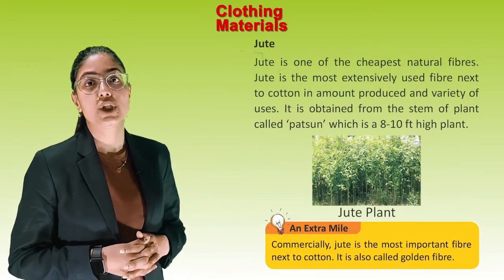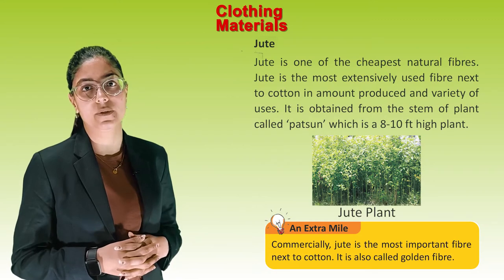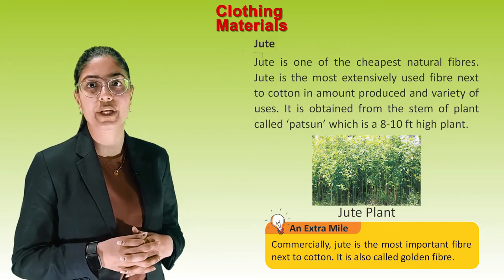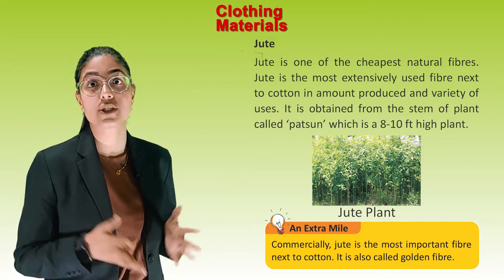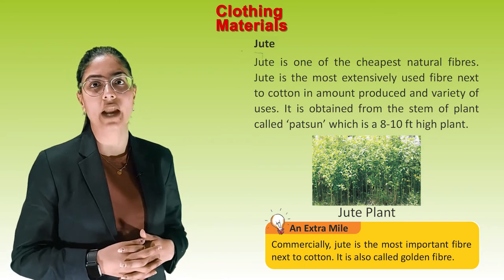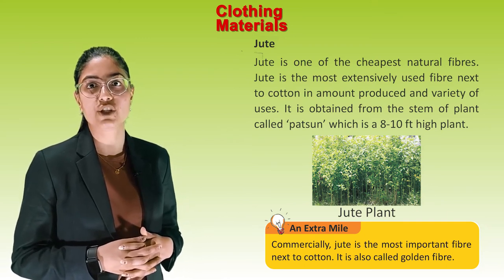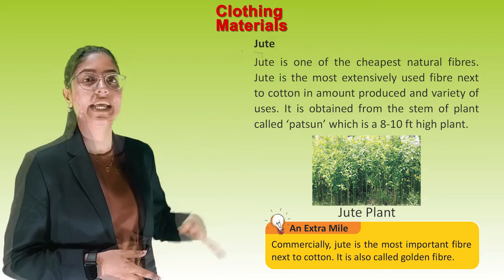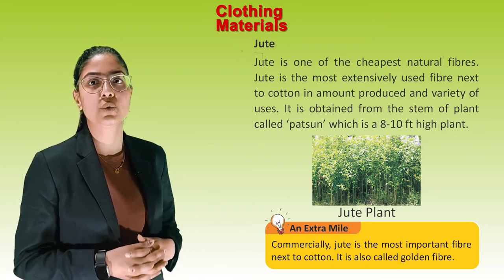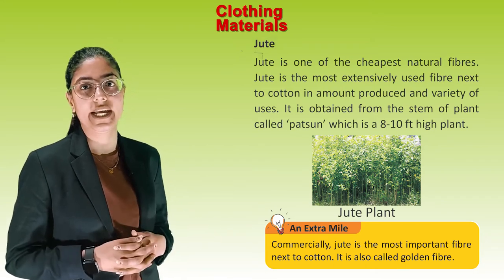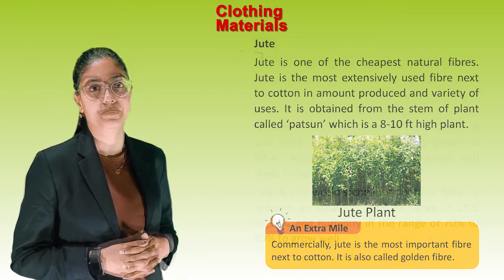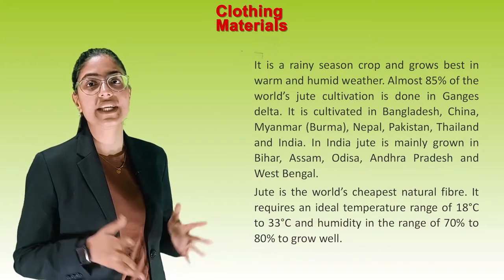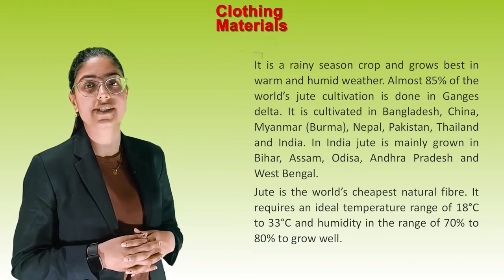Jute: Jute is one of the cheapest natural fibres and is the most extensively used fibre next to cotton in amount produced and variety of uses. It is obtained from the stem of a plant called Corchorus, which is an 8 to 10 feet high plant. Commercially, jute is the most important fibre next to cotton and is also called the golden fibre. It is a rainy season crop and grows best in warm and humid weather. Almost 85% of the world's jute cultivation is done in the Ganga Delta.